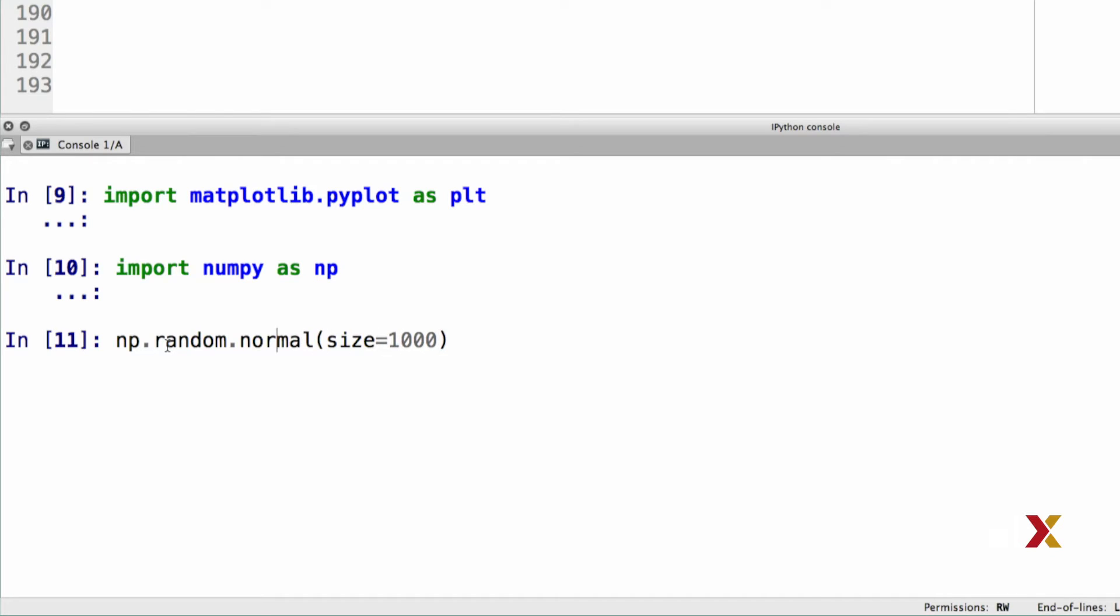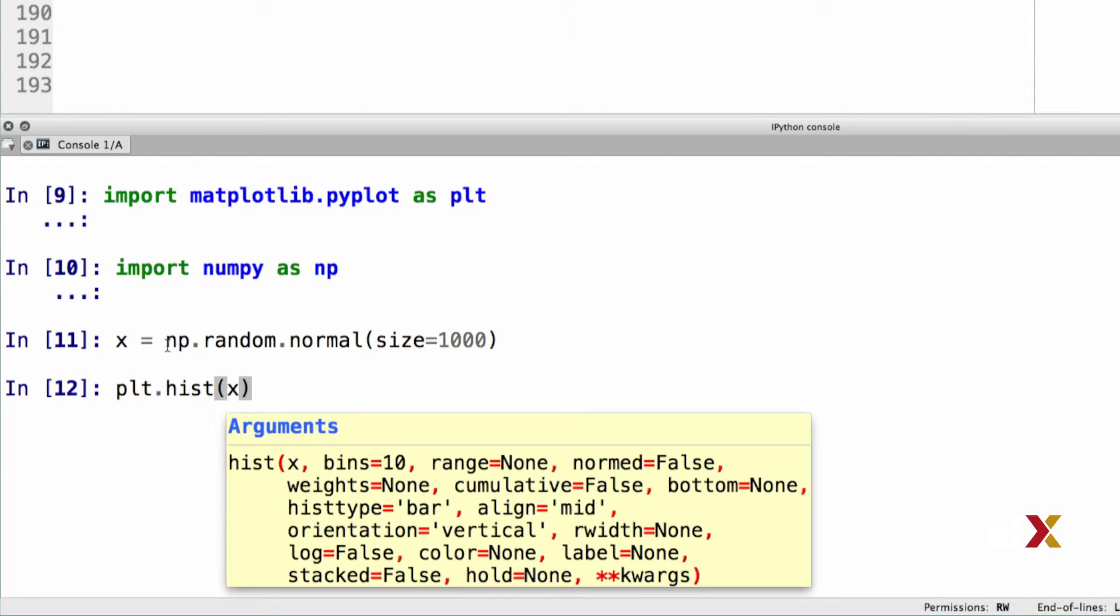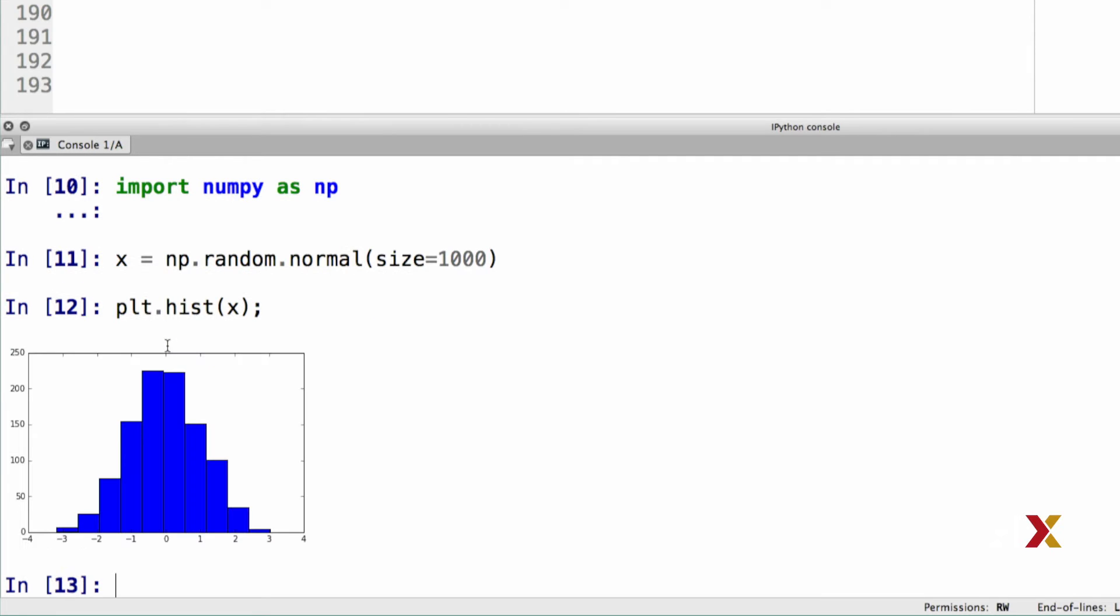In this case, I'd like to have 1,000 numbers, and I will assign this array into a vector x. We'll then call the PLT hist function, and Python returns a histogram to us.